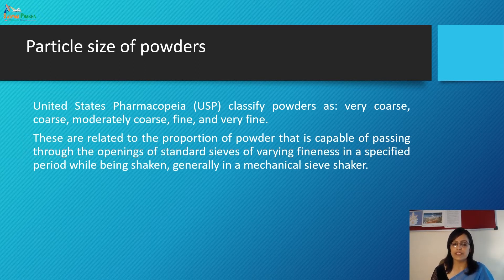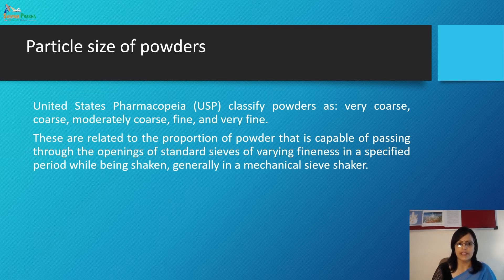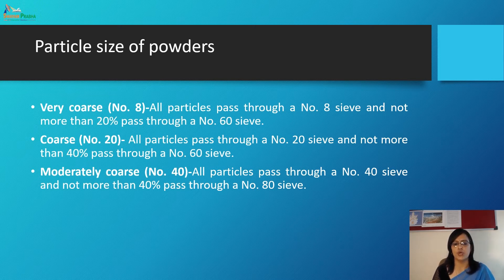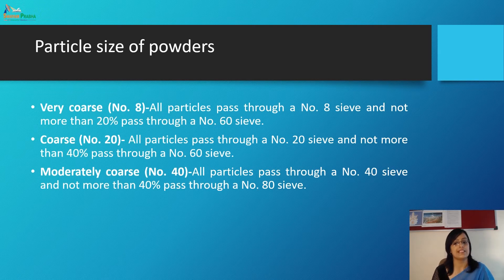The USP classifies powders as very coarse, coarse, moderate coarse, fine, and very fine. A very coarse powder: all particles pass through sieve number 8 and not more than 20% passes through sieve number 60.